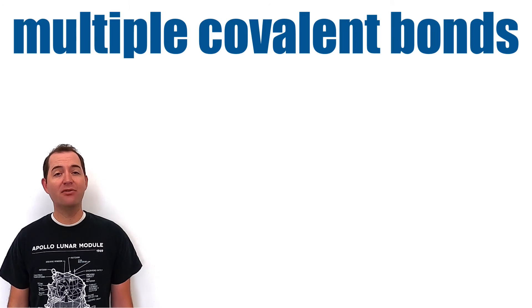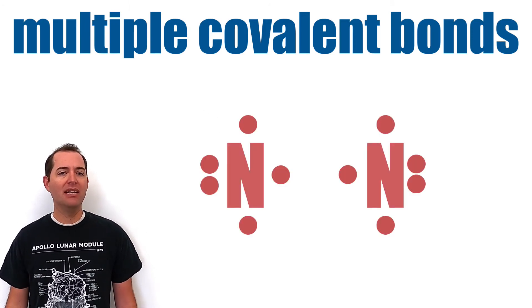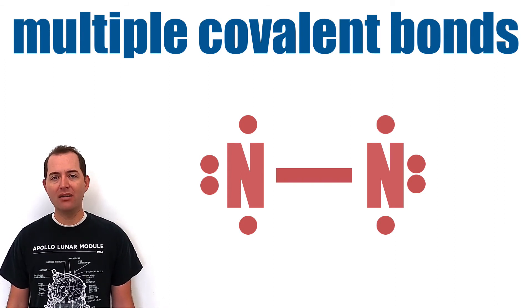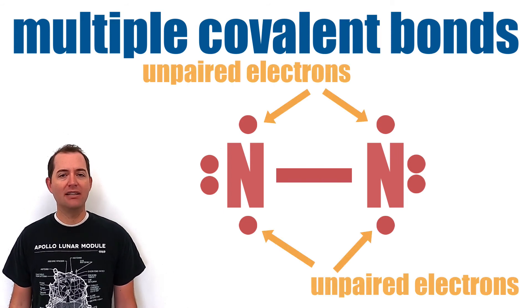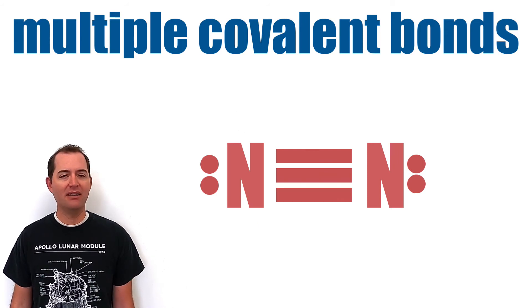Some atoms can even form multiple covalent bonds with the same element to meet the octet rule. In this molecule, after making a single covalent bond, there are still unpaired electrons. These atoms can continue to form covalent bonds until all atoms meet the octet rule.